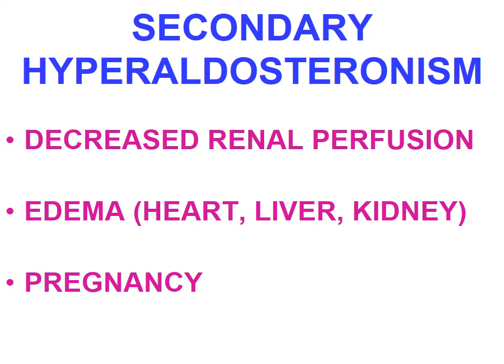Secondary hyperaldosteronism is due to aldosterone release through activation of the renin-angiotensin system, which could be caused by decreased renal perfusion, edema due to congestive heart failure, liver failure, kidney conditions like end-stage renal disease, or pregnancy — in which there is increased synthesis of angiotensinogen that results in increased production of aldosterone.